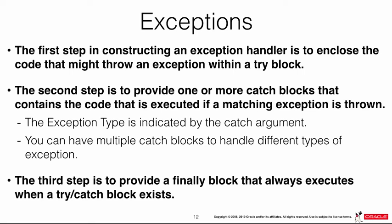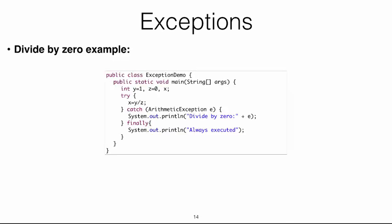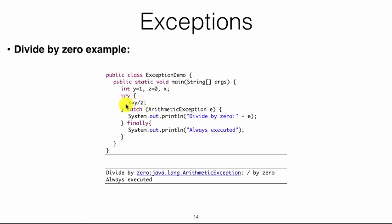To handle exceptions, you enclose the code that might generate one in try-catch blocks. In the try block you put the code that might throw an exception. In the catch block you handle it — you can have a catch block for each exception type. The finally block always executes whether or not an exception occurred, typically used for cleanup code. For the divide-by-zero example, place the division inside the try block, catch the ArithmeticException and print it. Running this code produces the expected output.